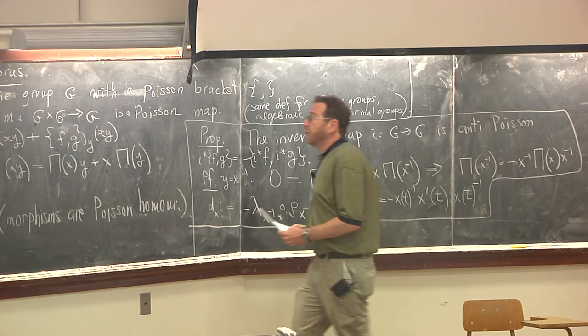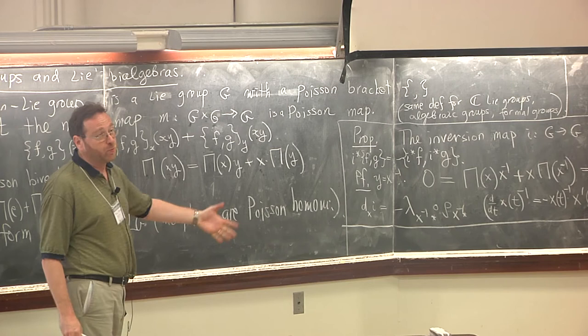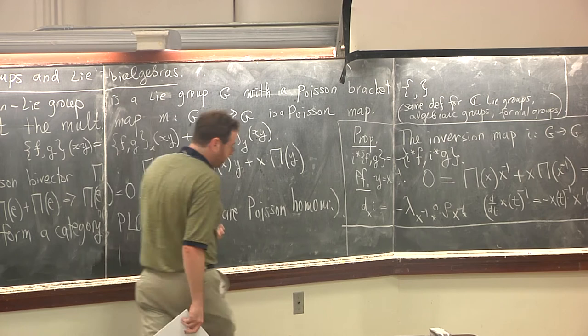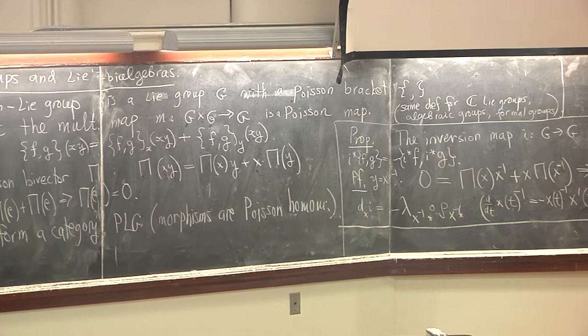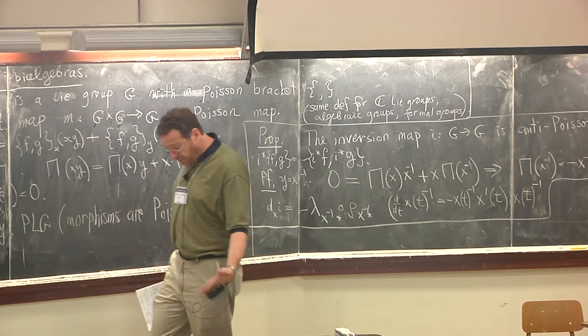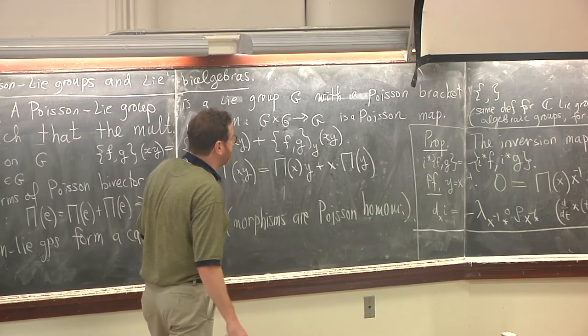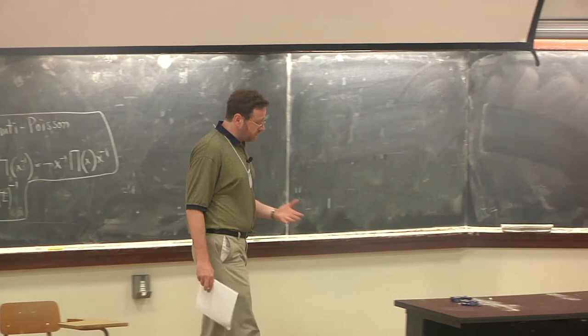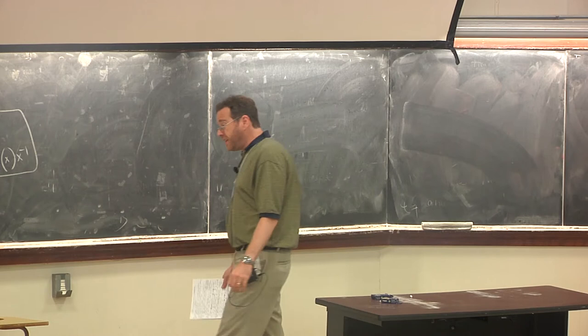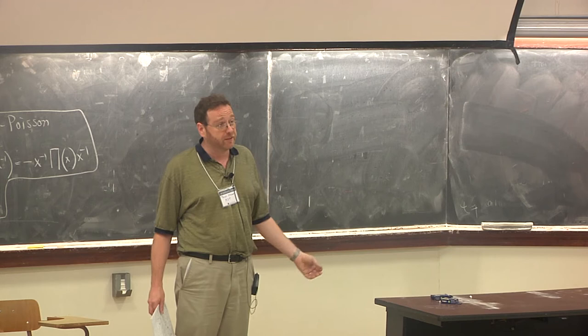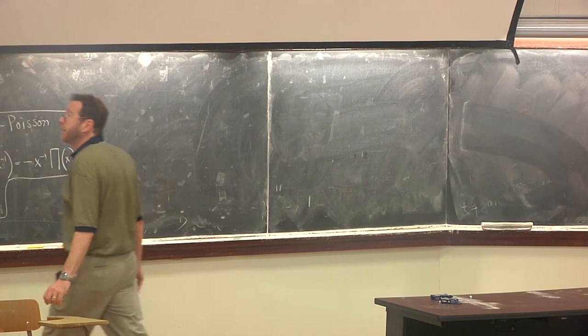The next thing I want to do: in Lie theory, the main tool for studying Lie groups is to pass from a Lie group to a Lie algebra, which is the linearization of the Lie group. A lot of the structure of a Lie group can be captured by the Lie algebra, which is linear. A Poisson-Lie group is a Lie group with an additional structure, so we want to see what that structure induces on the Lie algebra. By the main theorem of Lie theory, Lie groups and Lie algebras are the same thing — for simply connected Lie groups — so any structure on the Lie group should translate to the Lie algebra. That leads to the notion of the Lie bi-algebra.